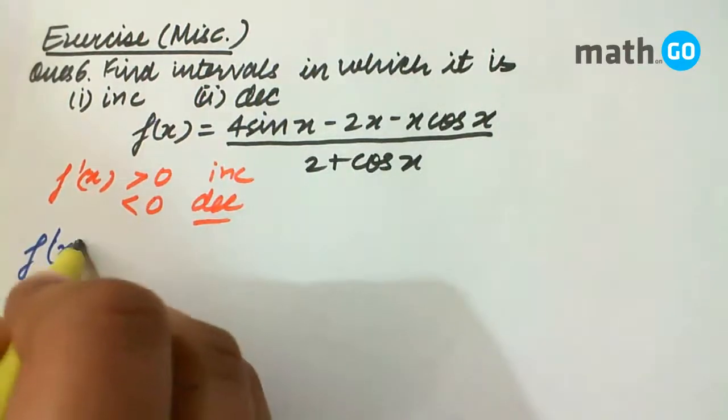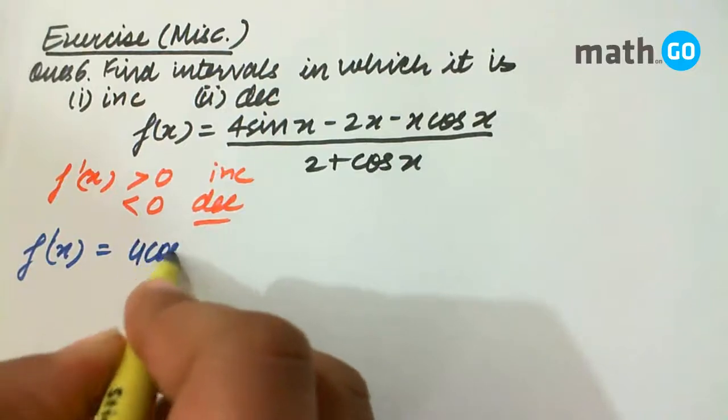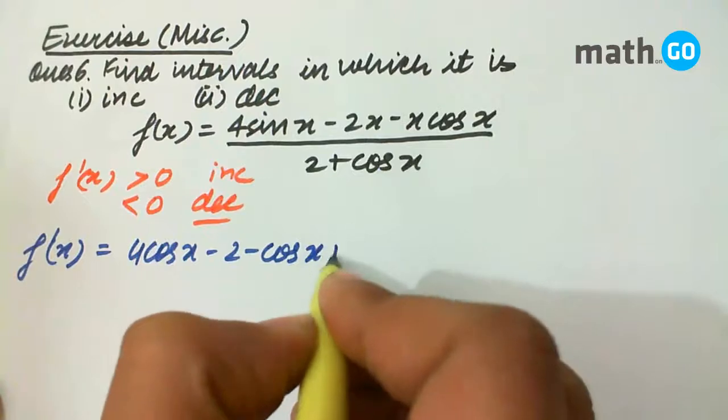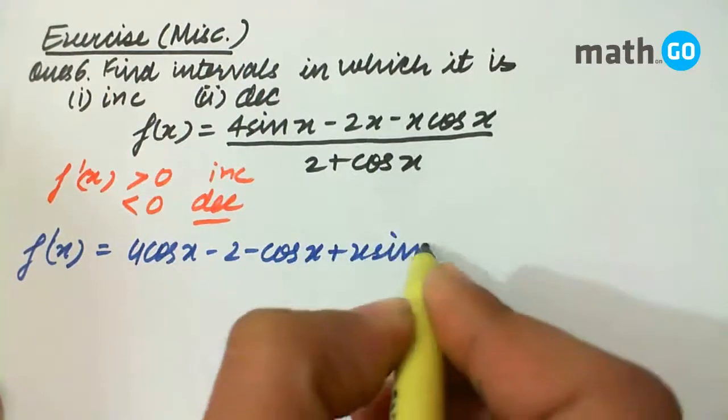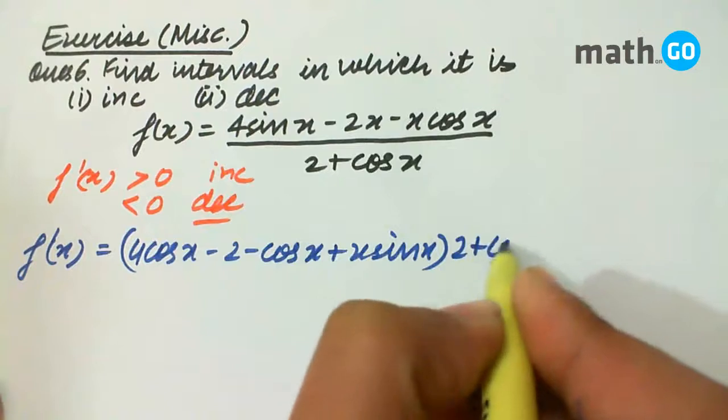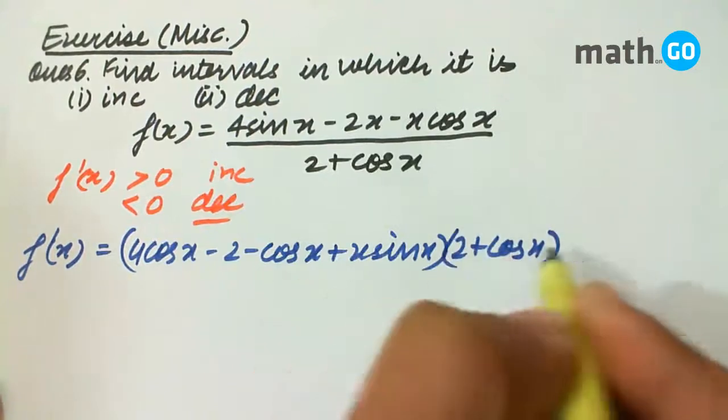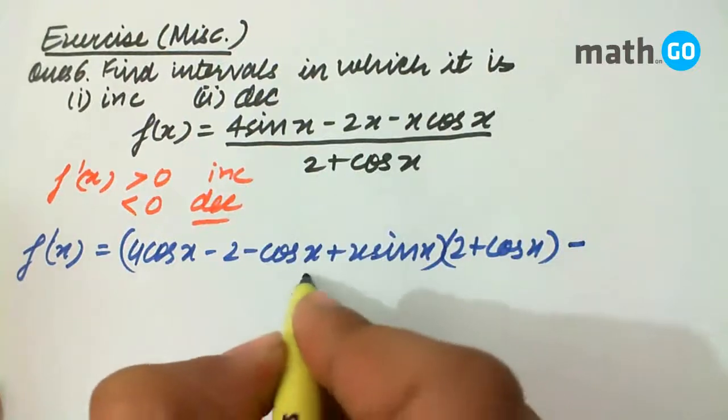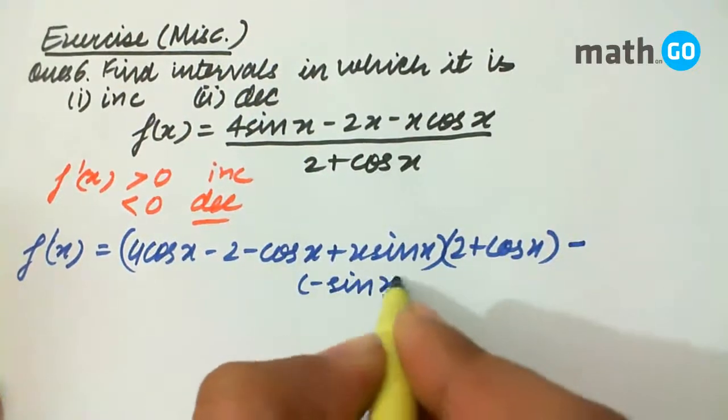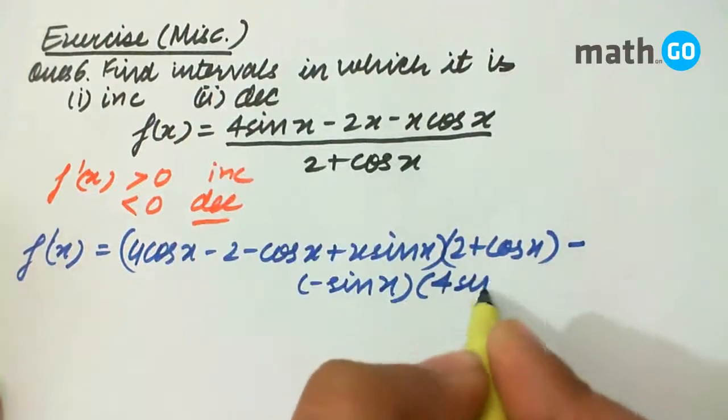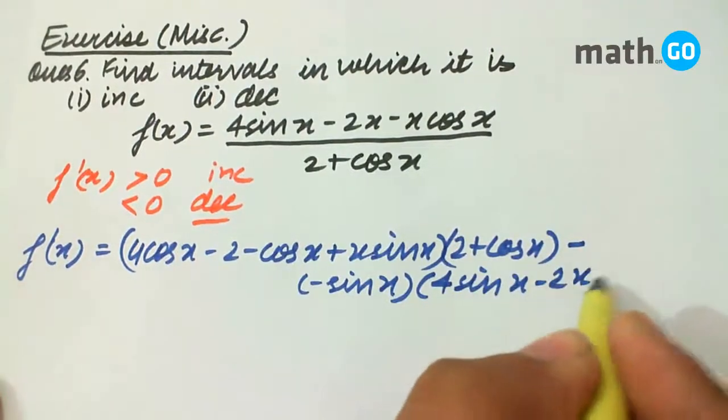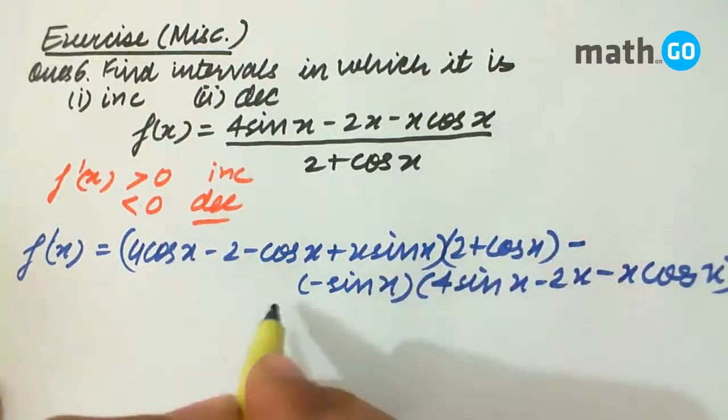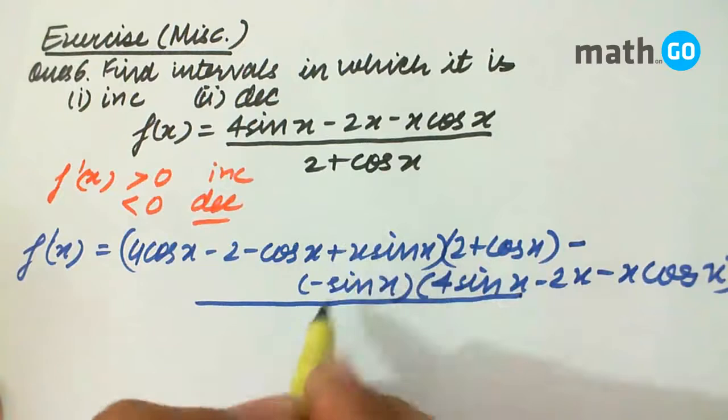What is f dash x? We are left with 4 cos x minus 2 minus cos x plus x sin x into 2 plus cos x minus this derivative, that is minus sin x into this as it is upon the whole square.